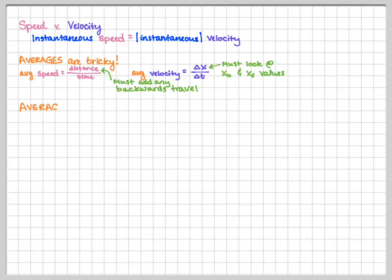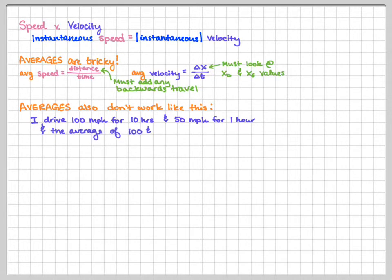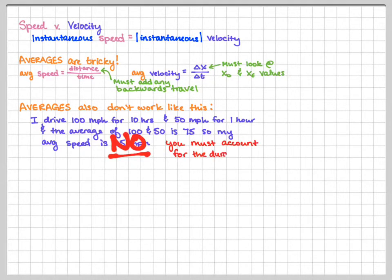Another tricky thing about averages is if you're driving like two different speeds or you're traveling two different speeds. So take a look at this example. This is definitely not real life. I would never go this fast. First, I drive 100 miles per hour for 10 hours and 50 miles per hour for one hour. The average of 100 miles per hour and 50 miles per hour is 75. So my average speed is 75 miles per hour. Sweet. I'm done. Woo. No. That is incorrect.